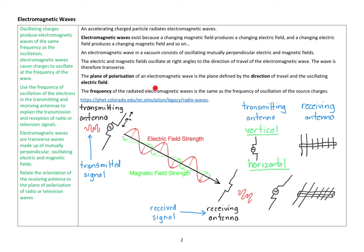The plane of polarisation of an electromagnetic wave is the plane defined by the direction of travel of the oscillating electric field. If we wanted to define the plane of polarisation here, it's the direction that the electric field is oscillating. Finally, the frequency of the radiated electromagnetic waves is the same as the frequency of oscillation of the source charge. Sorry, I actually already said that. Whatever the frequency of this is, is the same frequency as the electromagnetic wave. Whatever the frequency of the oscillating charge is.